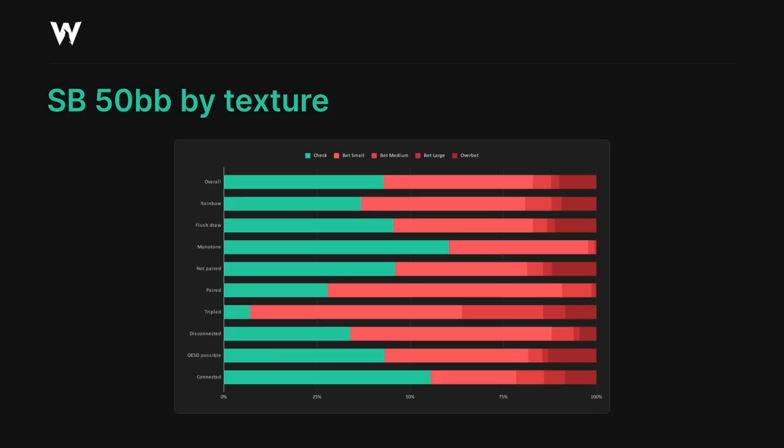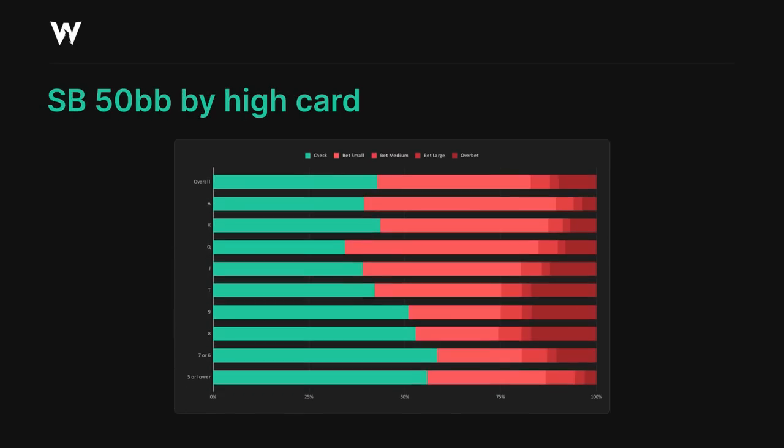The same trends as before are visible when it comes to texture, with the exception that paired boards are now pretty good for the raiser. Otherwise, everything stays more or less identical to what it was in limped pots. This is also broadly true for flop high card, although with the slight caveat that ace and king high boards are not quite as good for the raiser as they could be.